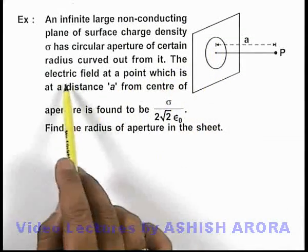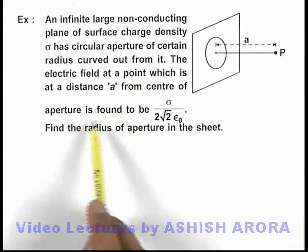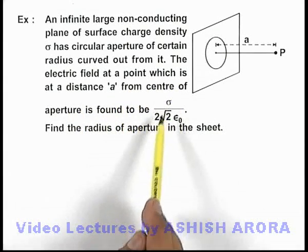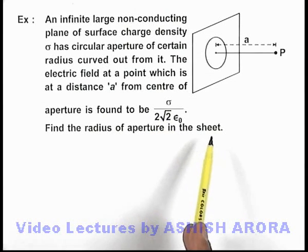We are given that the electric field at a point which is at a distance 'a' from the center of aperture is found to be sigma by 2 root 2 epsilon not, and we are required to find the radius of aperture in the sheet.